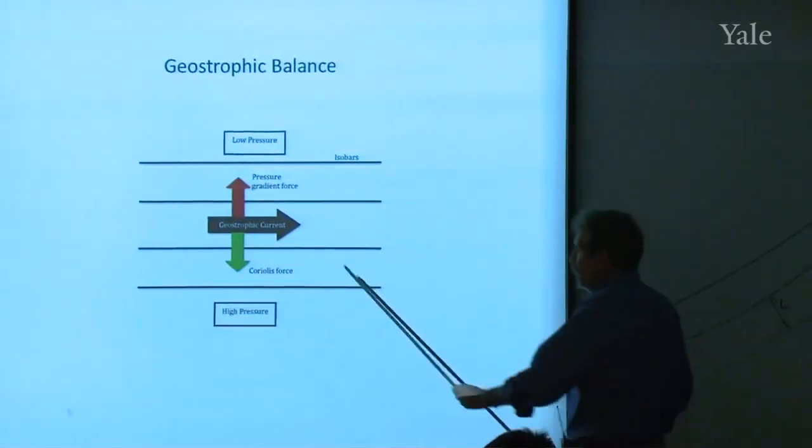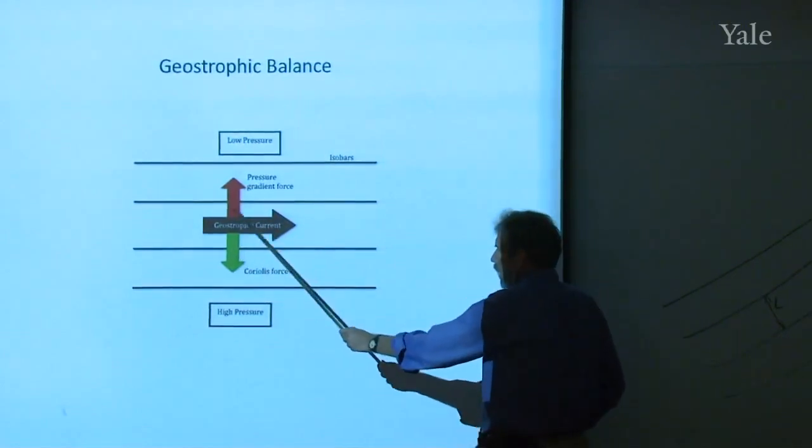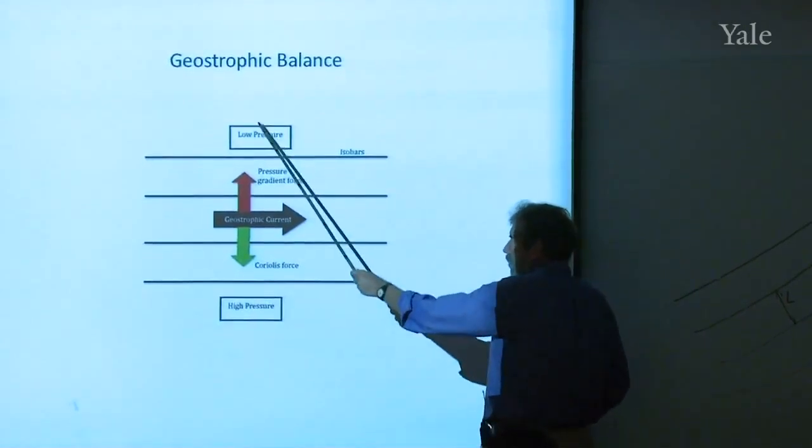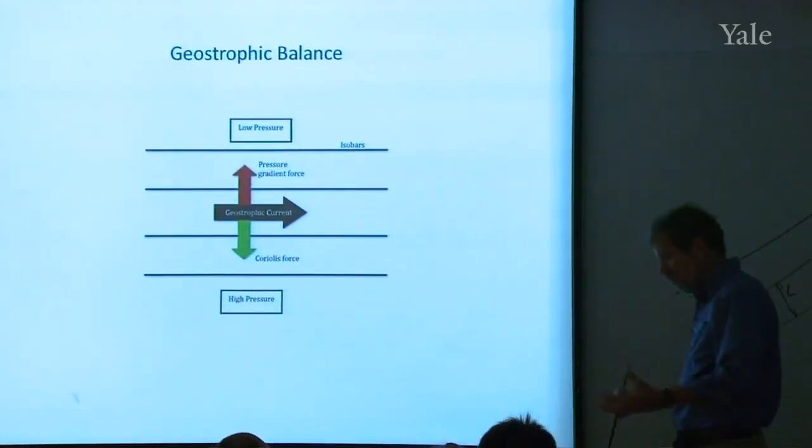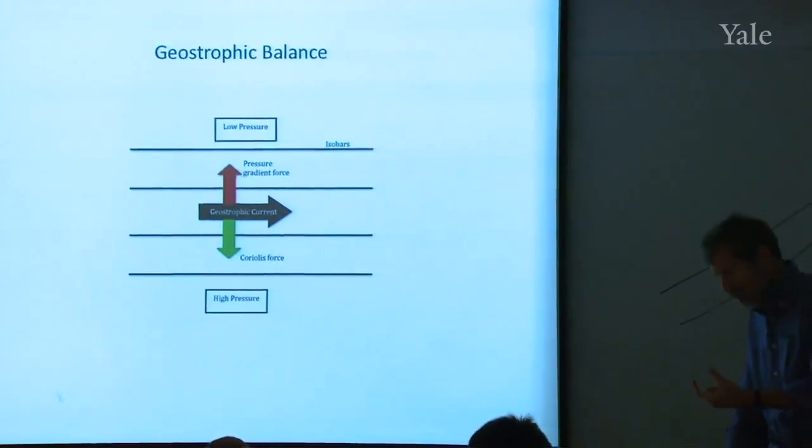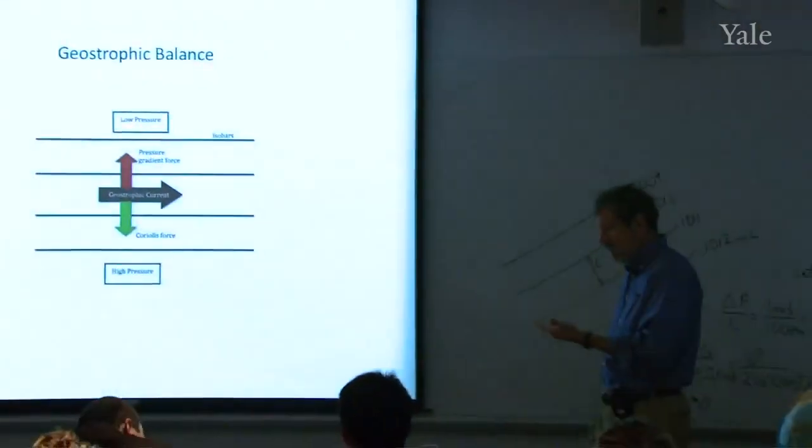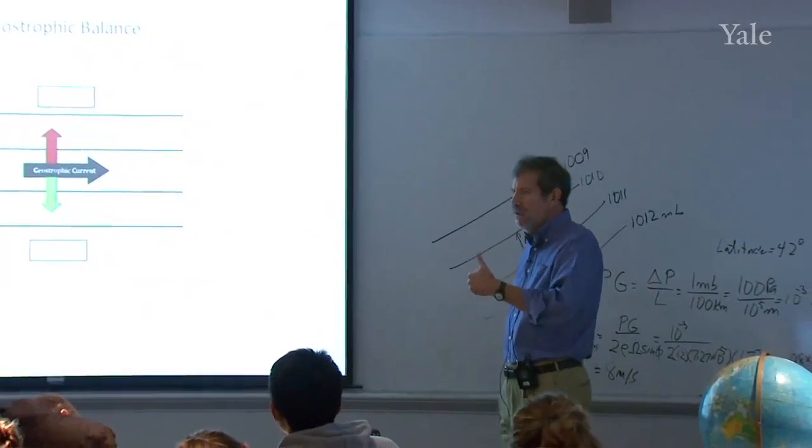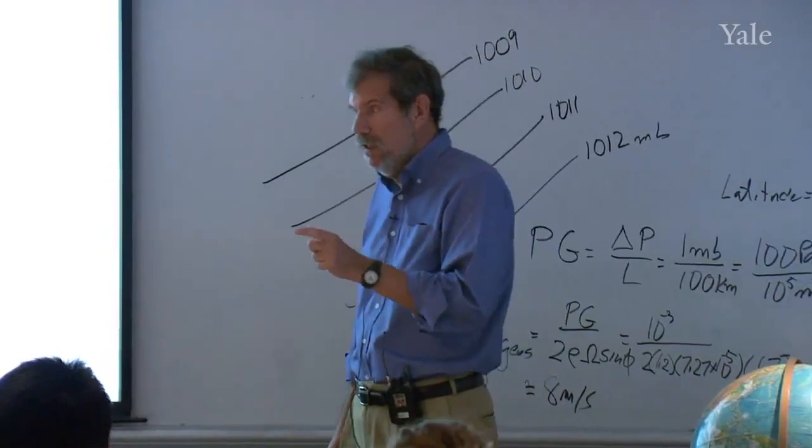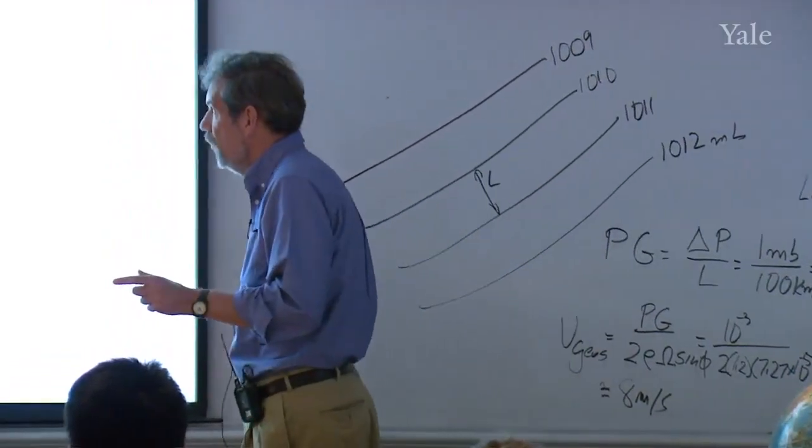then there's going to be a pressure gradient force acting on a parcel of air sitting here from high to low, right? If I've got an object, no matter how small it is, if there's slightly higher pressure on one side and lower pressure on the other side, there's going to be a net force on that. That net force is what we call the pressure gradient force.